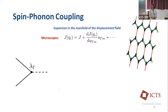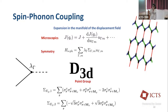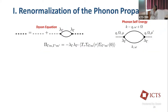Now we are ready to look at the spin-phonon coupling. Typically the lattice is not always perfect, and because of distortions — changes in bond length or bond angles — there could be a change in the Kitaev coupling strength. We can expand the Kitaev coupling strength in the displacement field U_gamma. When we write down this Hamiltonian, we use group theory, specifically the point group D3D, to get the appropriate spin bilinears.